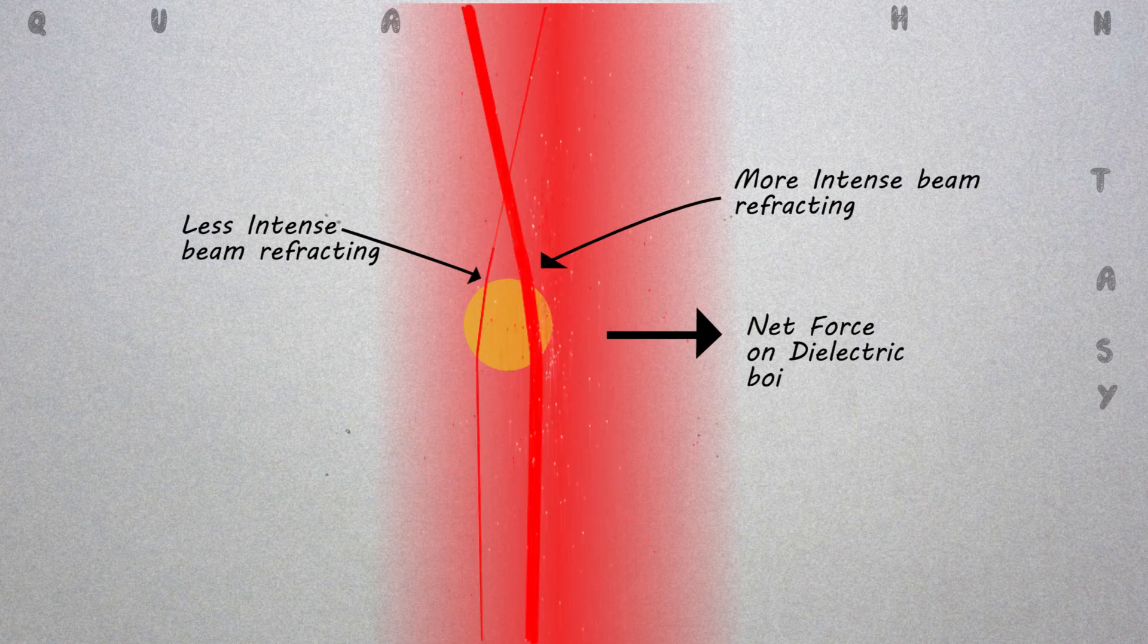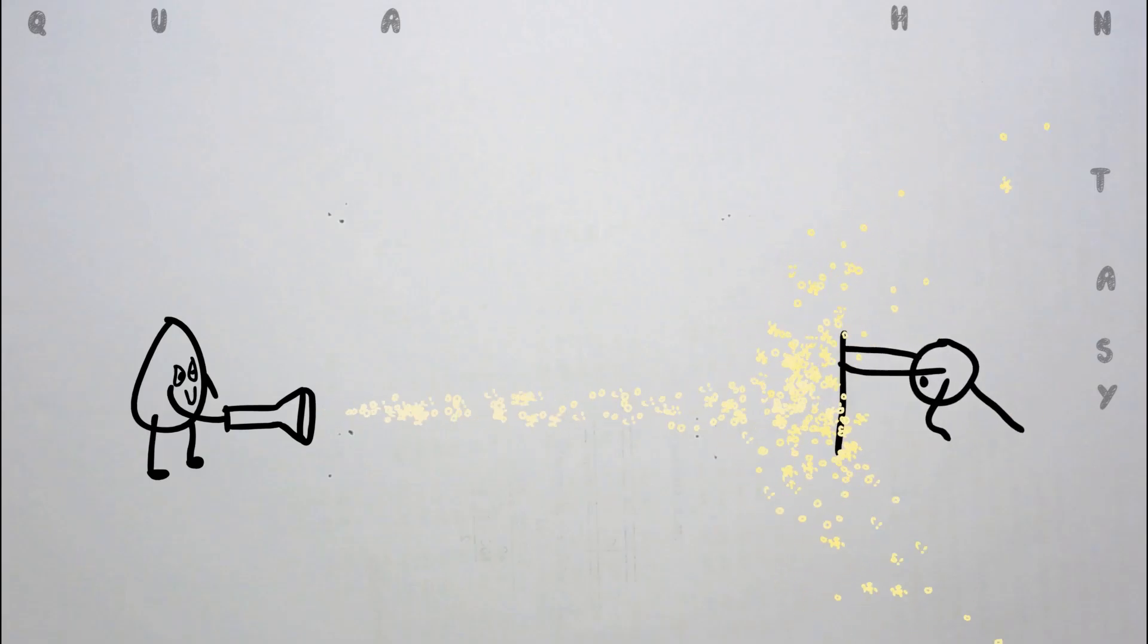Since light has a momentum associated with it, this change in direction indicates that its momentum has changed. Due to Newton's third law, there should be an equal and opposite force on the bead.